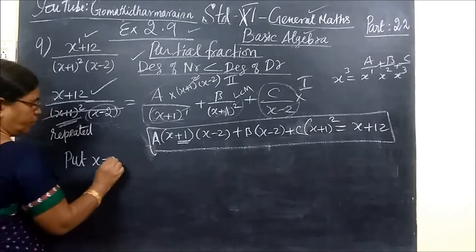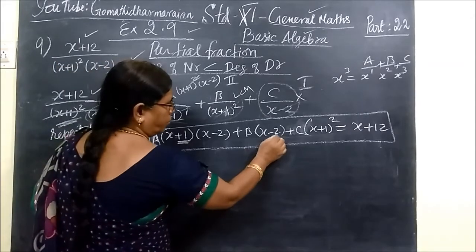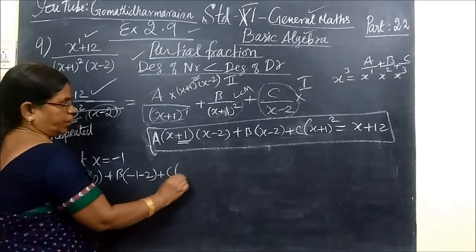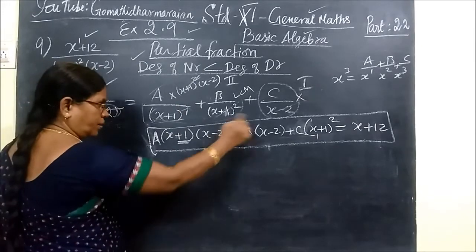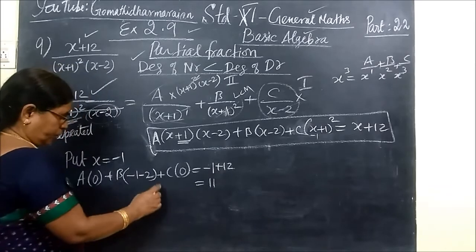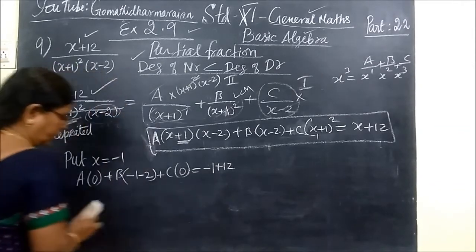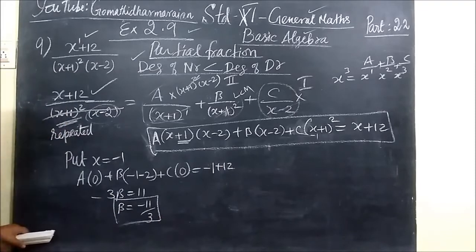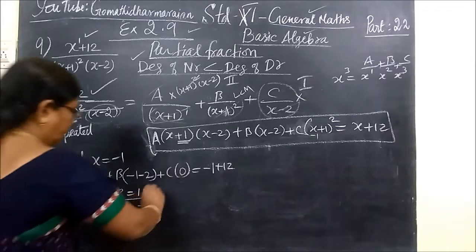Now you write put X equal to minus 1. So this term will be 0. Then B bracket minus 1 minus 2 plus C bracket 0. This is equal to minus 1 plus 12, so this is equal to 11. That means minus 3B equals 11. So B equal to minus 11 by 3.